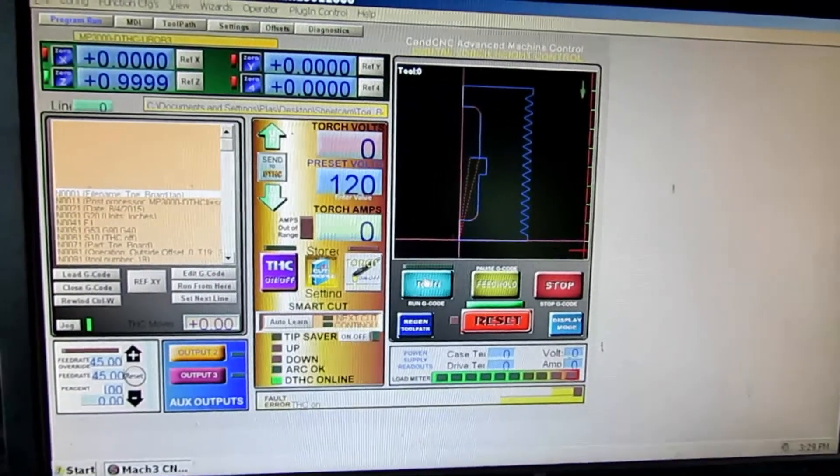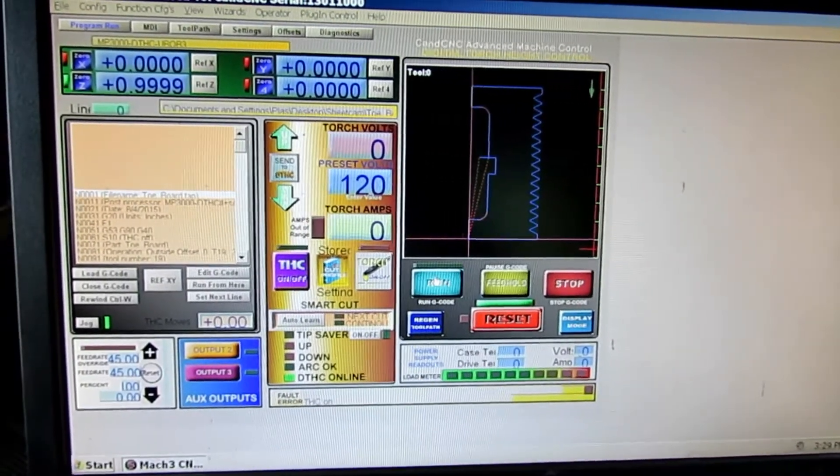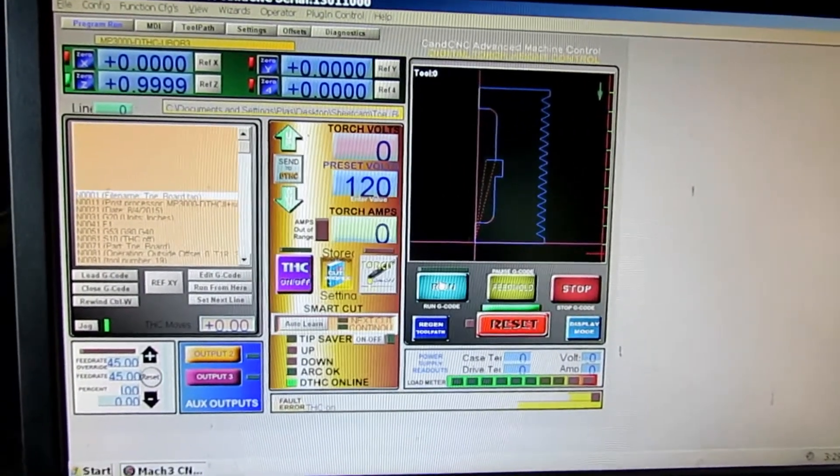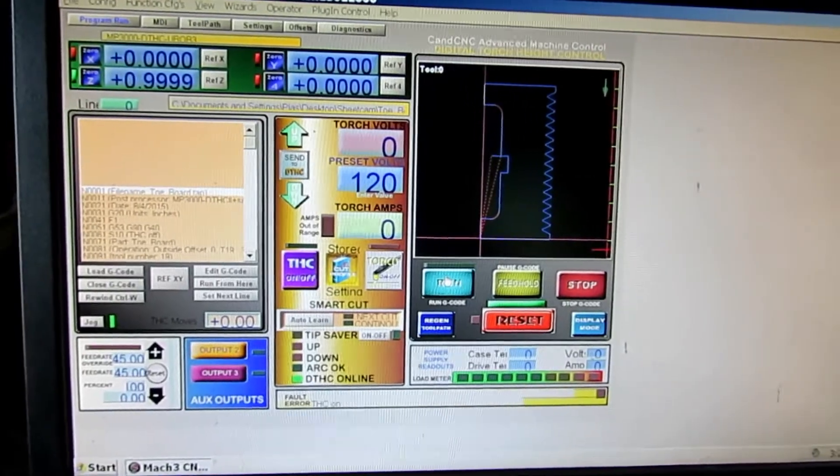This is a short video of plasma cutting the tow board for my mill. As you can see, you start by drawing it up, then you write the G-code and you put it into Mach 3 that controls the CNC plasma cutter.